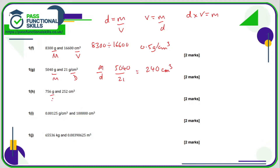Here we've got a mass and a volume, so we want the density. Density is the mass divided by the volume. 756 divided by 252 is 3 grams per cubic centimetre.